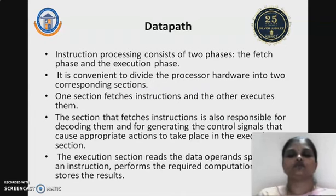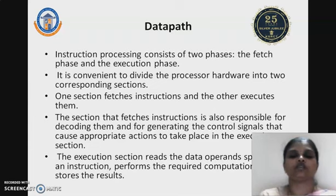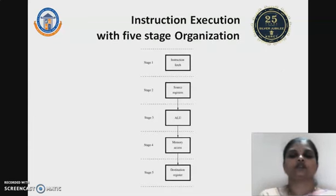Since instructions to be executed follow different stages, instruction processing consists of two phases: the fetch phase and the execution phase. It is convenient to divide the processor hardware into two corresponding sections — one section fetches the instructions and the other executes them. The fetch section is also responsible for decoding instructions and generating the control signals appropriate for executing an instruction. Looking at this diagram, you have different stages of instruction processing: stage 1, 2, 3, 4, and 5.